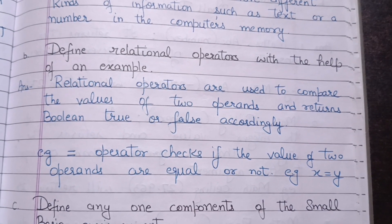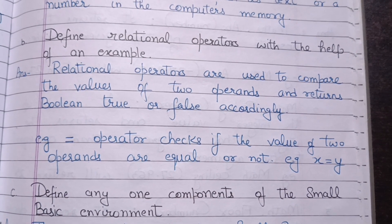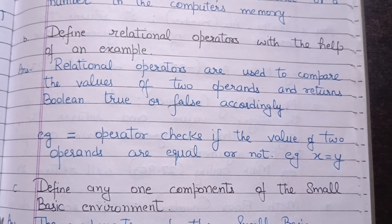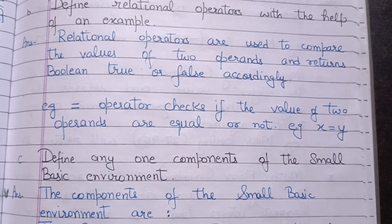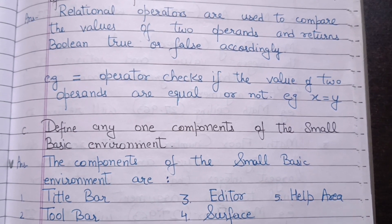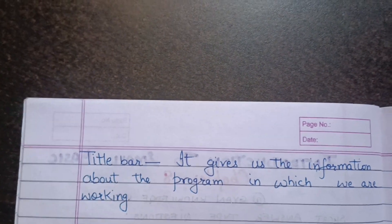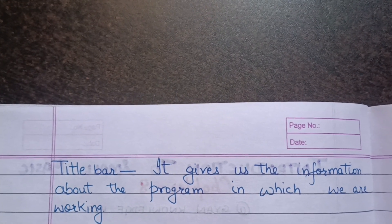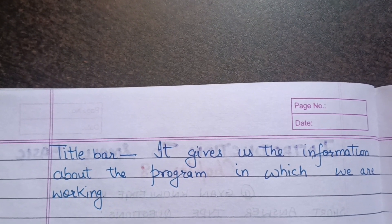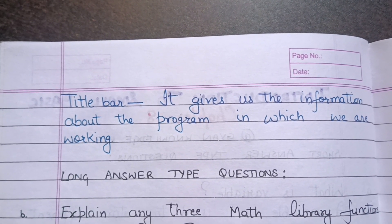Define any one component of the Small Basic environment. The components of the Small Basic environment are: Title Bar, Editor, Help Area, Toolbar, and Surface. We'll define one as asked in the question. Title Bar: it gives us information about the program in which we are working.